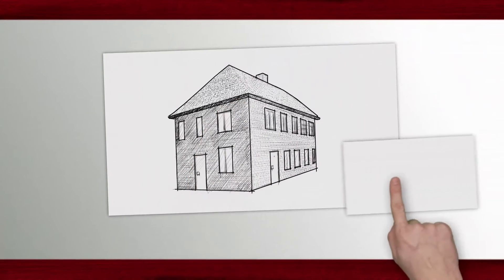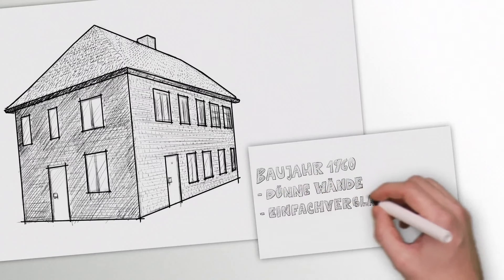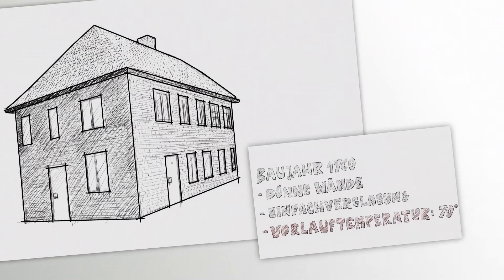Here are just two examples. A classic family house built in the 60s. In these older buildings the heating system is designed to run at 70 degrees. This is very high by today's standards.